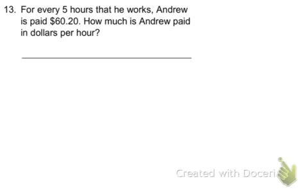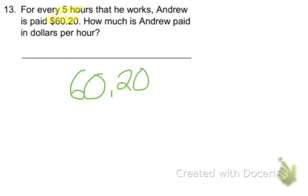For every five hours that he works, Andrew is paid $60.20. How much is he paid in dollars per hour? So that is $60.20 for every five hours — how much is that per one hour?